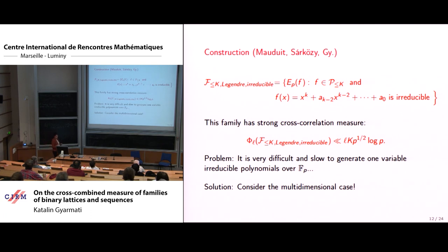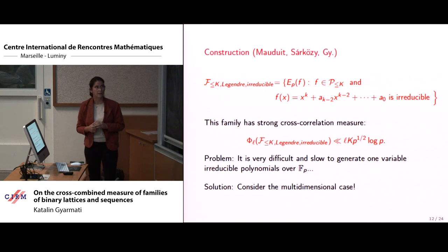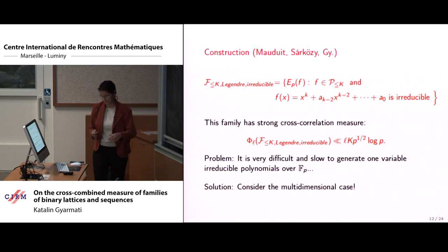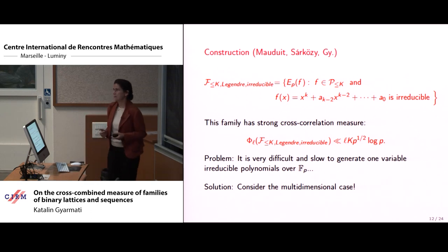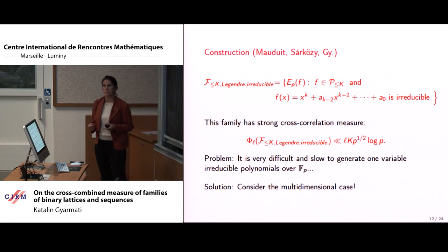The main coefficient of the polynomial is zero, so the main term is x to the power k, the next coefficient is zero, and after that the polynomial continues. It turned out there were no problems then — everything worked. So I decided to generalize the cross-correlation measure to binary lattices.